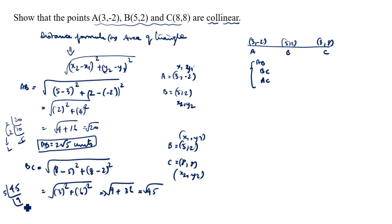√45 = √(9 × 5) = 3√5. So BC = 3√5 units.